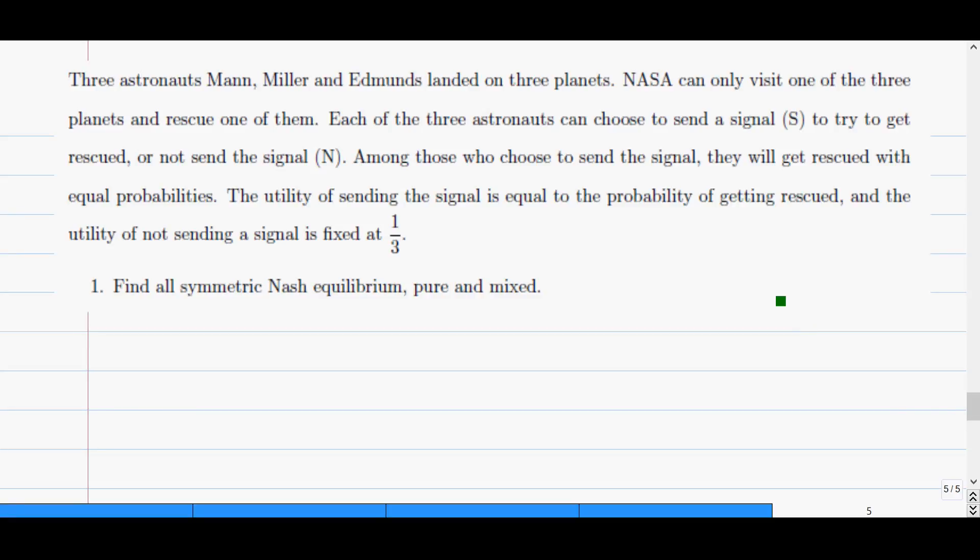This is the last question from problem set 5, the mixed-strategy equilibrium problem set. It's just to let you practice writing down the indifference condition for more than two players. The numbers here, I use one-third, is not a good number after I write the answer. So the numbers are not important, the main idea is how to write down the indifference condition.